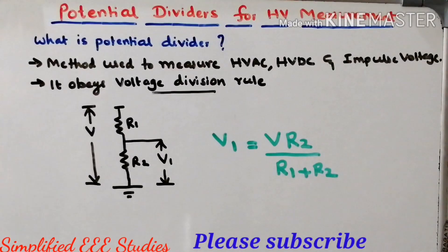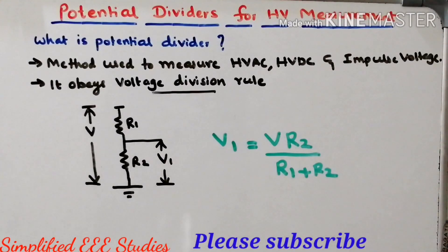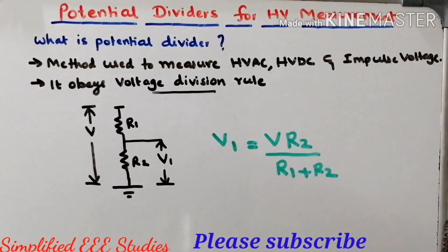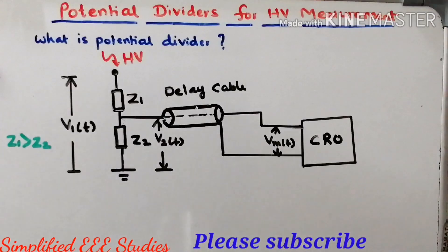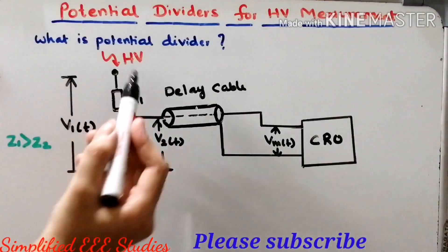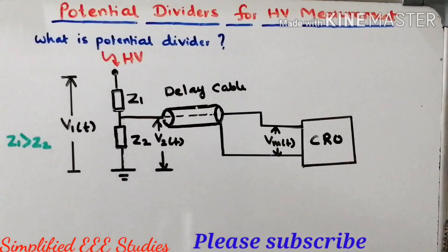By using the voltage division rule, we can measure high voltage. This is actually the importance of the potential divider. Now let us learn how we measure high voltage by using a potential divider.